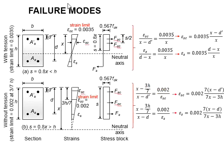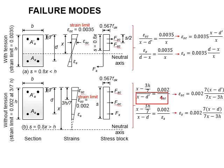To determine the strength in the compression steel, this height is referred, which is x minus d', as compared here.